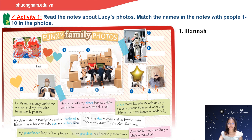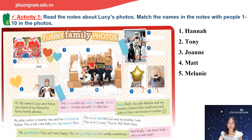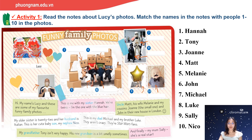And the answers are: number 1 — Hannah (Lucy's sister), number 2 — Tony, number 3 — Joanne, number 4 — Matt, number 5 — Melanie, number 6 — John, number 7 — Michael, number 8 — Luke, number 9 — Sally, and number 10 — Nico, the nephew. He's very cute, right?